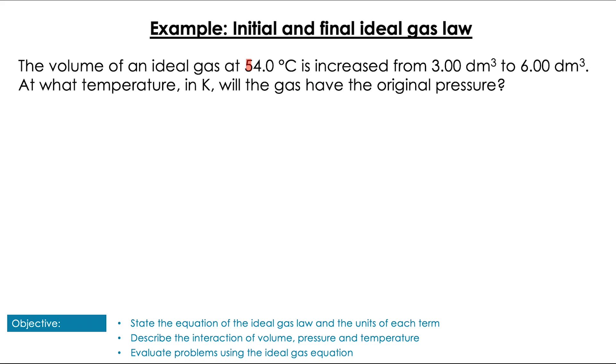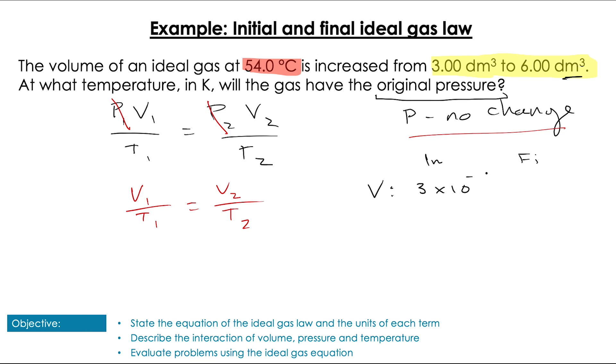Let's have a look at an example here. So here we've got the temperature is given to us as the initial and we say we're increasing the volume and it asks us what temperature will the gas have its original pressure. Now, that means that P is not changing. Pressure is not changing. So when I write out my overall equation, I know that because P isn't changing, I can just cancel that out. So I'm going to get V1 over T1 equals V2 over T2. Then I'm just going to plug in my values as they are given to me in the question. So let's just write those down in the correct units first. So I've got volume 3 times 10 to the minus 3 initially and then 6 times 10 to the minus 3 at the end. The temperature is 327 Kelvin and we're trying to find the final temperature.